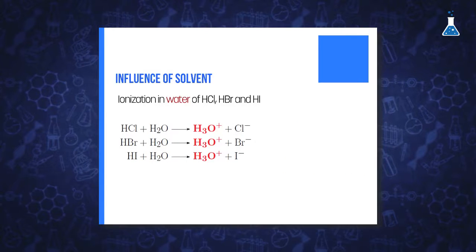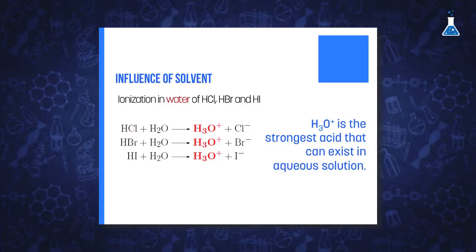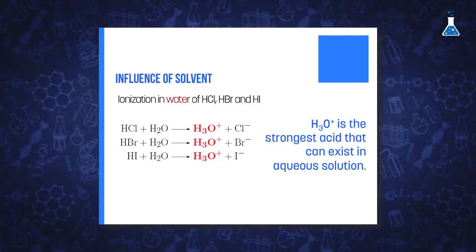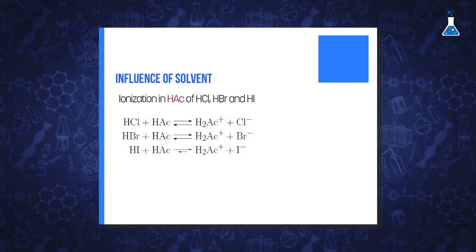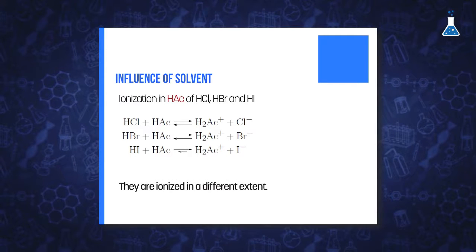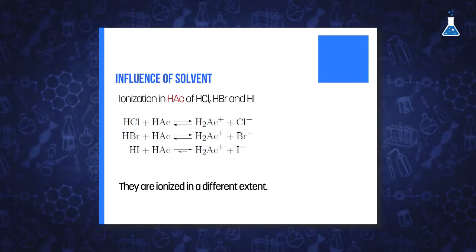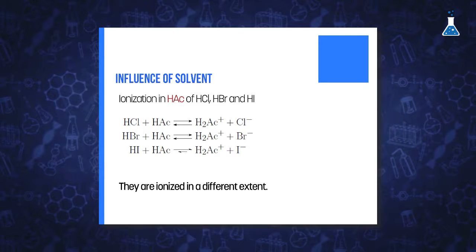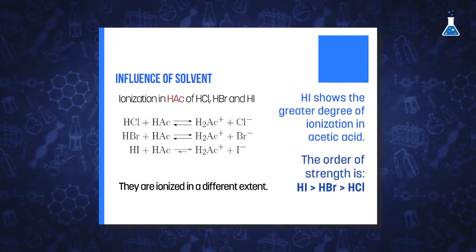Regardless of how strong the acid is, the strongest acid that can exist in solution is the oxonium ion, and that will be the same in the three cases. However, if we dissolve the three acids in acetic acid, they are ionized to different extents, because the ability to accept a proton by acetic acid is much weaker than in water. A similar reasoning could be applied to base behavior.